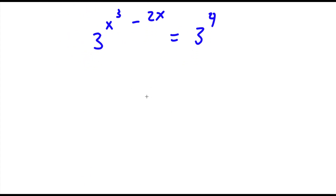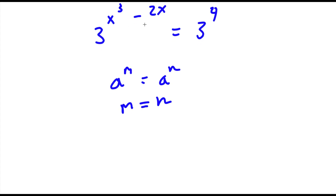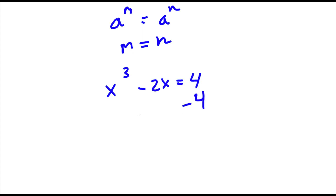Now, because these two bases are the same — if I have something in the form a to the power of m is equal to a to the power of n, then m is equal to n. So in this case, x to the power of 3 minus 2x would equal 4. If x to the power of 3 minus 2x is equal to 4, then if I subtract 4 on both sides, I have x to the power of 3 minus 2x minus 4 is equal to 0.